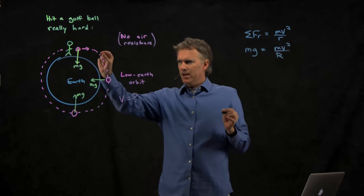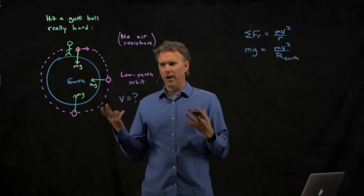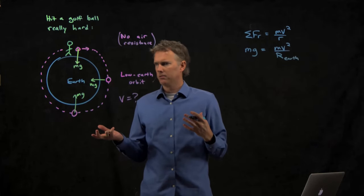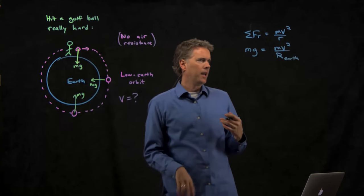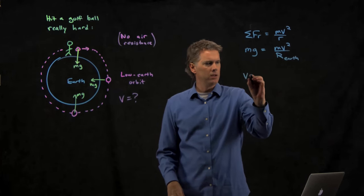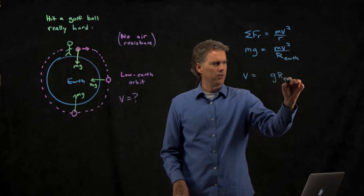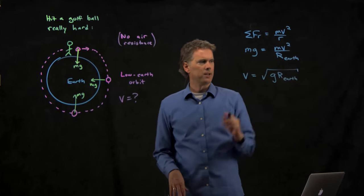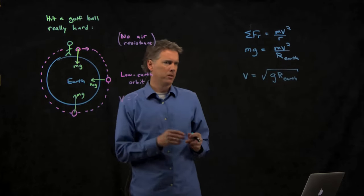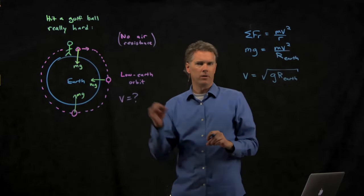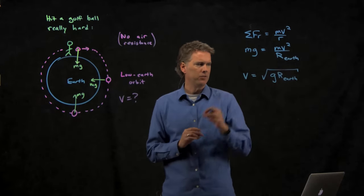But if you are very near the surface of the earth, the radius is just the radius of the earth. Right? So that is your r. And now look what happens. V is g times the radius of the earth. And we have to take the square root of that. M drops out. There's no mass of the golf ball anymore. So you could do it with a baseball or you could do it with a cannonball. Wouldn't matter. You get the same answer for v.